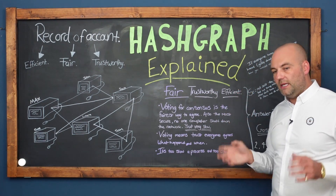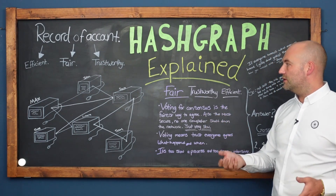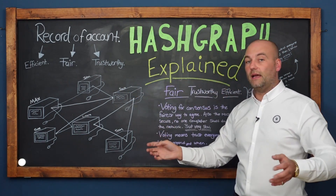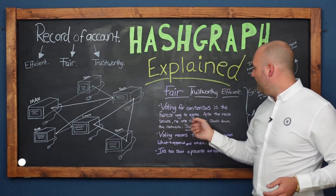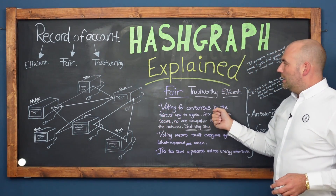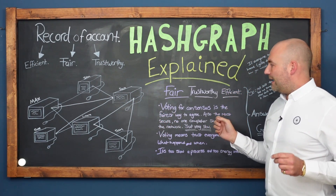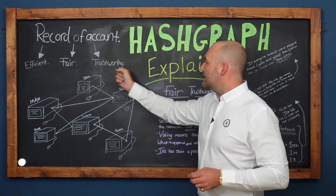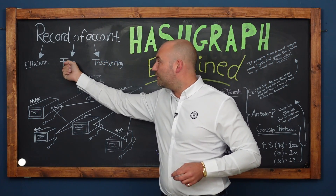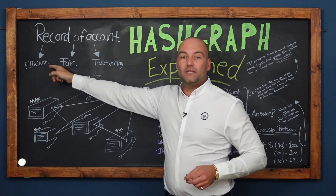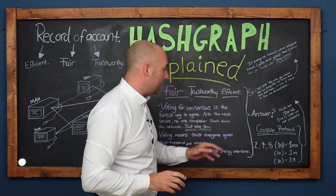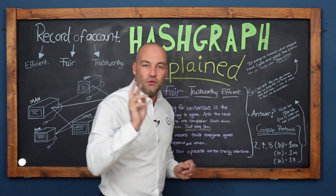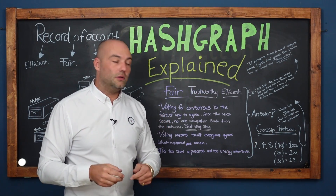It's too slow a process and too energy intensive. The voting system is the best system for a record of account — for the computers to vote, everyone to agree, and then record it, voting on what happened and in what order. But the problem is it's very, very slow, so nobody uses it. They do other things like having one computer decide everything for everybody — the emperor and the king. So what's genius about Hedera Hashgraph is that it's solved this problem. It's the most trustworthy and the most fair, but it's not efficient. So how do we deal with the efficiency? Two words: gossip protocol.